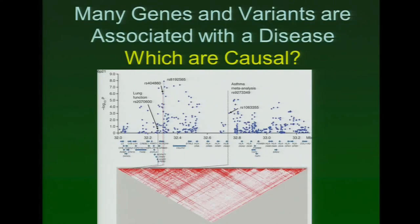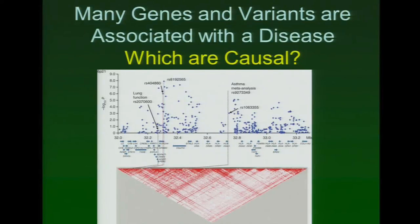Pathogenically, causally, mechanistically related to disease — there's something that's really there that is contributing to the mechanism of how disease happens. But they've got a whole bunch of buddies along for the ride. LD does exist. It's very non-trivial to figure out: there is a region, there's something real in there, but of a whole bunch of variants in those regions, which is the variant or variants really causing the phenotypic effect?